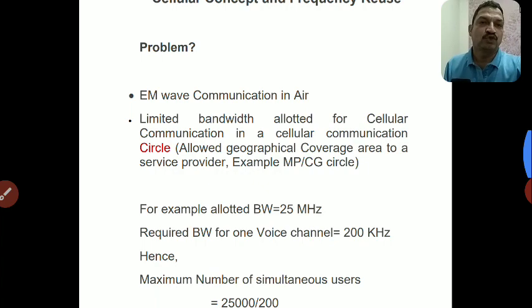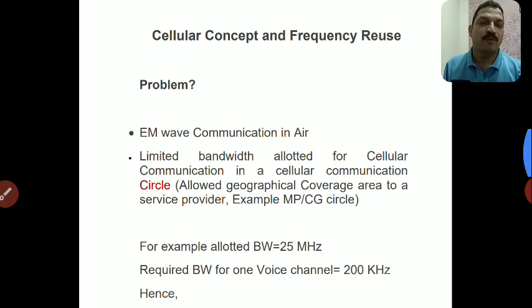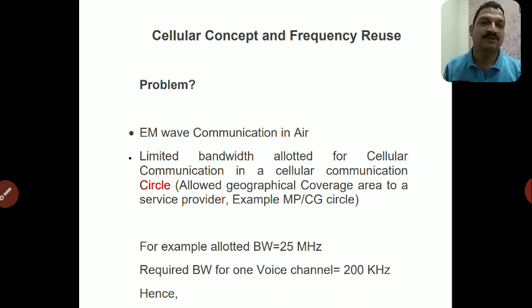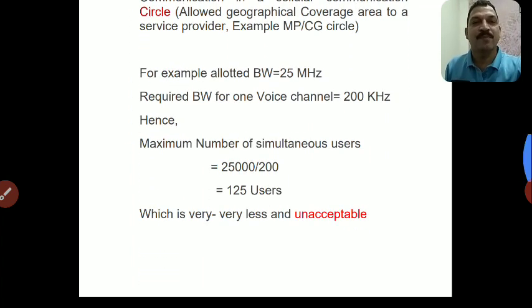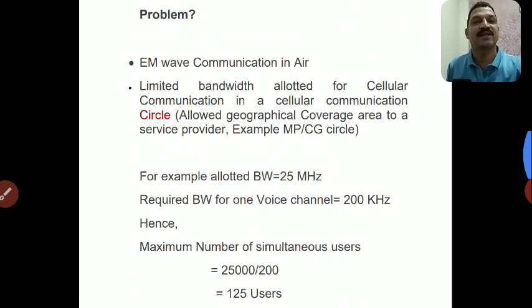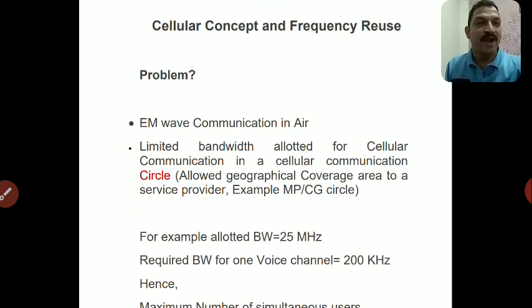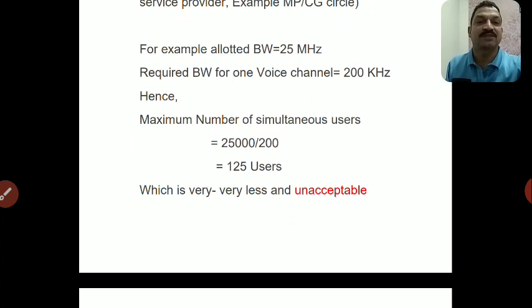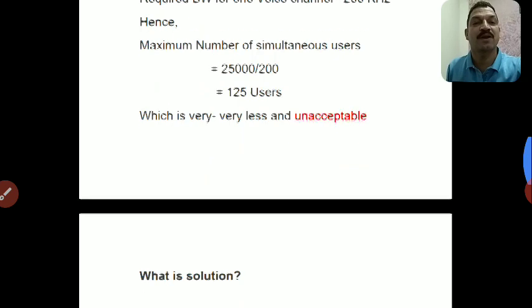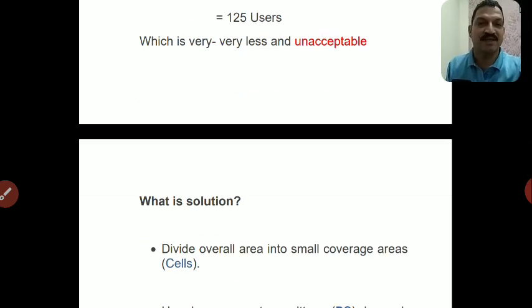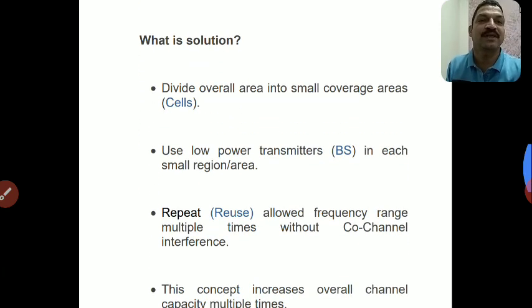Means जो हमें bandwidth provide की गई है उस provided bandwidth में अगर हम simple communication system use करें — एक tower और उस coverage area में phone use करें — तो at the most 125 mobile phones ही simultaneously operate करवा सकते हैं। तो bandwidth is very limited और उस limited bandwidth में ही हमें हमारी channel capacity को increase करना है — 125 users को बढ़ाकर 1000, 2000, 5000, 10,000 इस तरीके से users को बढ़ाना है। तो हमें कुछ trick या solutions ढूंढने पड़ेंगे।